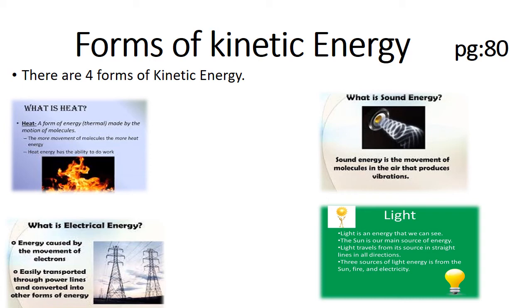There are three sources of light energy: the sun, fire, and electricity. Now, electrical energy is caused by the movement of electrons. It is easily transported through power lines and can be converted into other forms of energy. For example, an oven converts electric energy into heat energy. Electrical energy is used in many appliances at home, and lightning is another example of electrical energy.